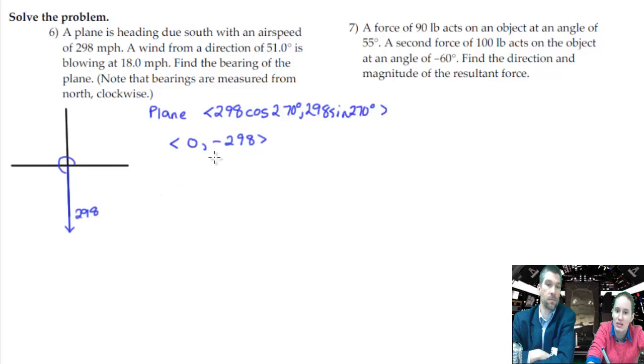Now let's do the wind. Okay. So the wind is blowing from a direction of 51 degrees at 18 miles per hour. This is a bearing. Just assume they're talking about bearings in the plane problem. In the plane problem, they are talking about bearings.